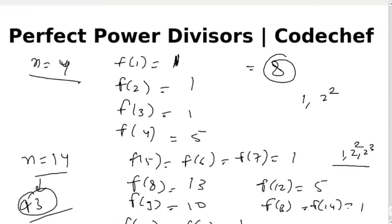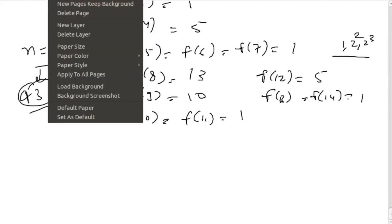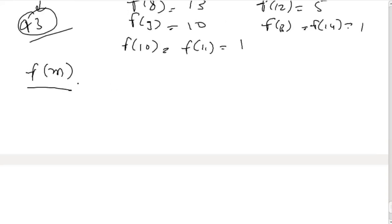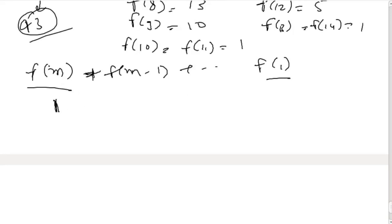Now let's think about how to solve this. Suppose we are trying to find f(1) + f(2) + ... + f(n). Instead of computing f(m) for each m individually, we check each perfect power and ask: how many of the f(m) values does it contribute to? The first perfect power is obviously 1, and since 1 divides every m, it contributes to all n terms. So 1 contributes n to the total sum.